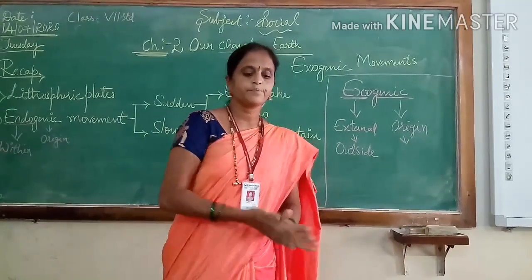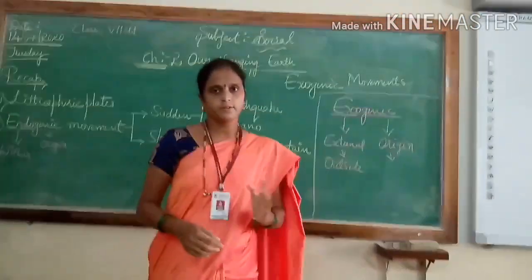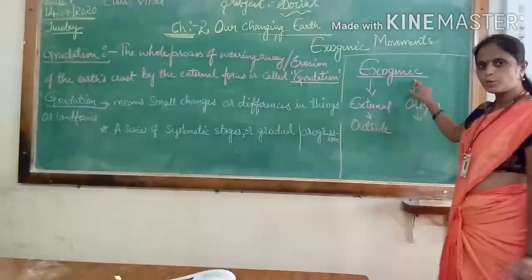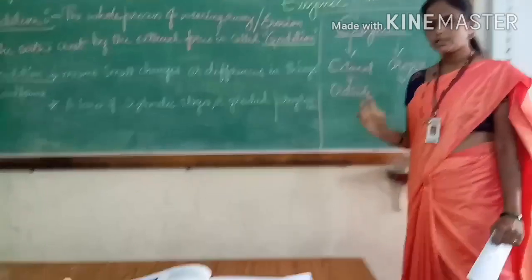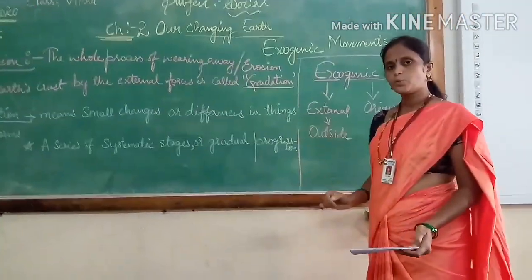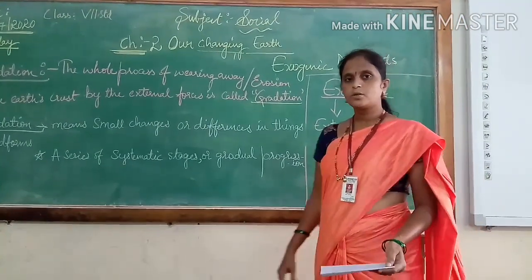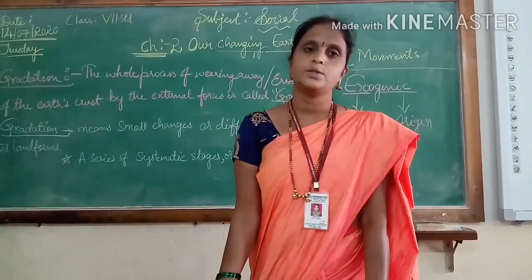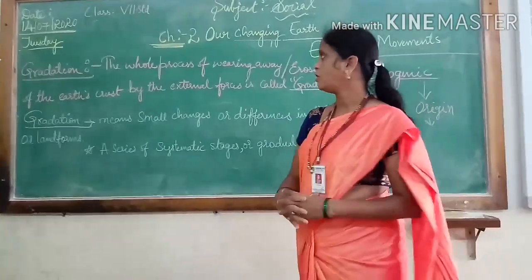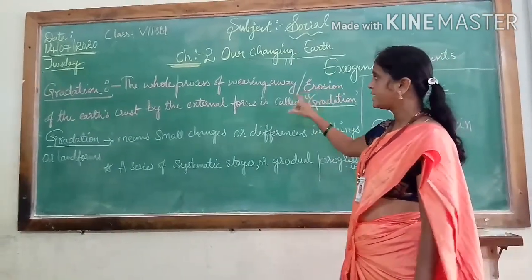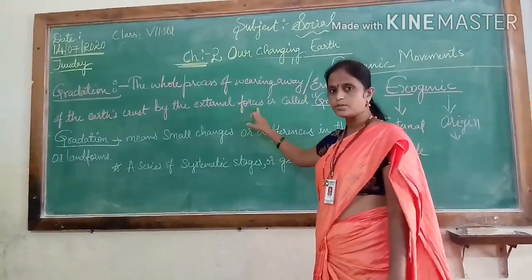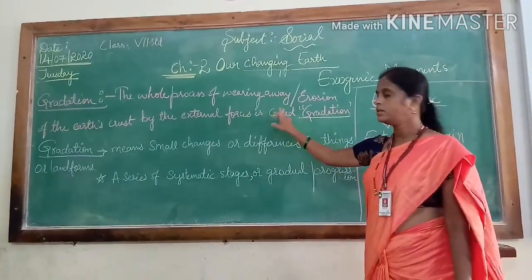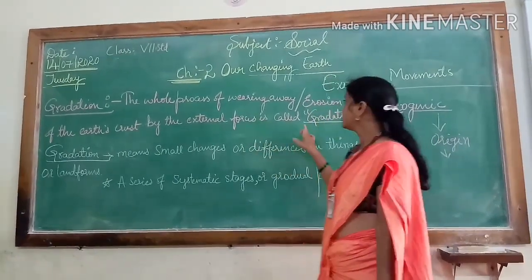These exogenic forces work fast or slow — there are two types of forces. These forces give rise to a variety of landforms on the earth and are also known as external forces. They are directly or indirectly affected by the sun's energy. The whole process of wearing away, erosion, or carrying away of the earth's crust by the external forces is known as gradation. It is due to agents such as wind, ice, etc.